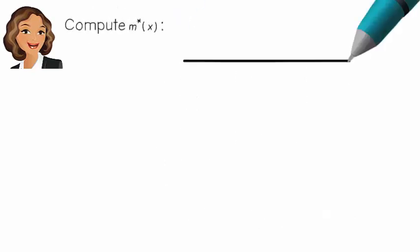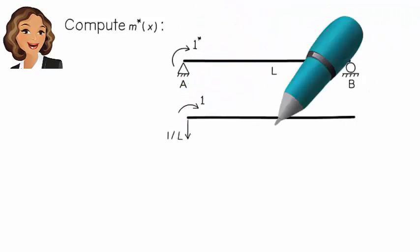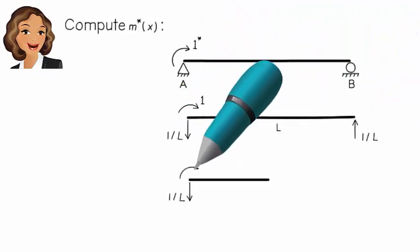To determine m star x, we place a unit clockwise moment at A like this. Then we can write the beam's bending moment equation like this.